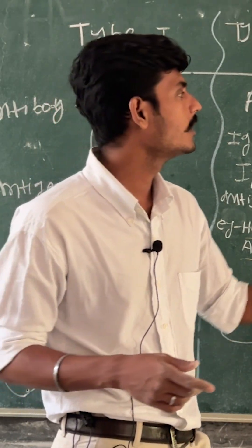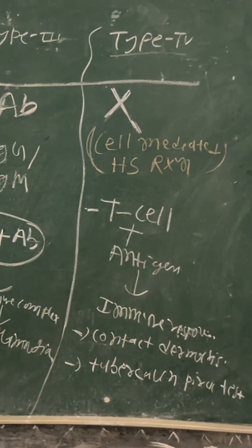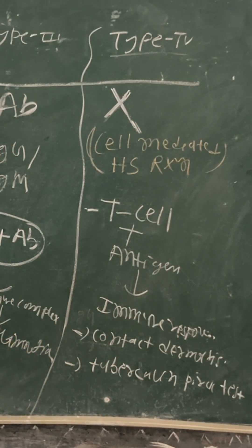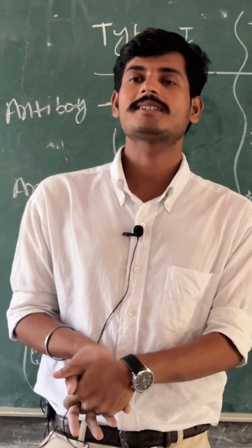In the fourth type, there is a cell involved called the T cell which binds with the antigen and causes the immune response. Examples are contact dermatitis and tuberculin test.